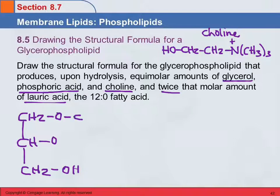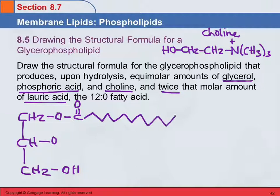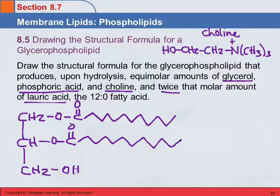Counting out the 12 carbons of lauric acid for each of the two fatty acid chains — that's really all the math we have in organic chemistry, counting carbon atoms.